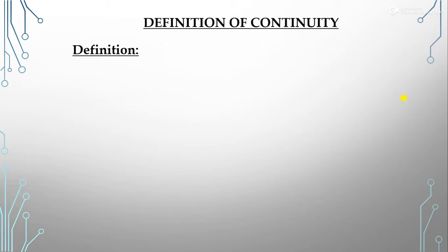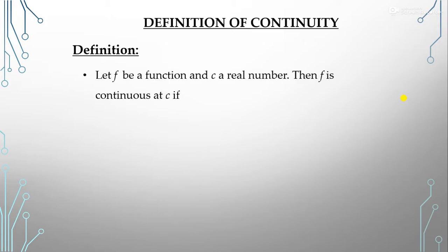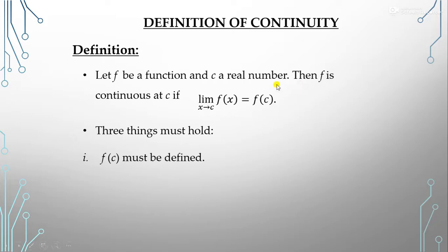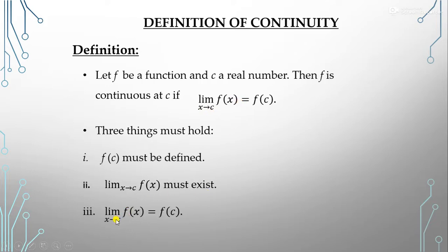Now the formal definition, which you will use to verify whether a function is continuous or not: let f be a function and c a real number. Then f is continuous at c if the limit as x tends to c of f(x) is equal to f(c). This requires three things: first, f(c) must be defined; second, the limit as x tends to c of f(x) must exist.